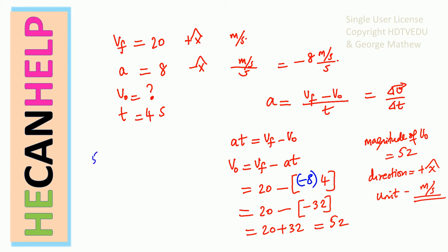If our initial velocity was 52, after 1 second it becomes 44 — the speed goes down by 8 because the acceleration is negative 8. So from 52 it becomes 44, from 44 it becomes 36, from 36 it becomes 28, and from 28 it becomes 20. That's 52 to 44: 1 second; 44 to 36: 1 second; 36 to 28: 1 second; 28 to 20: 1 second. So we have 4 seconds total — we are good. From a common sense point of view, everything looks good.